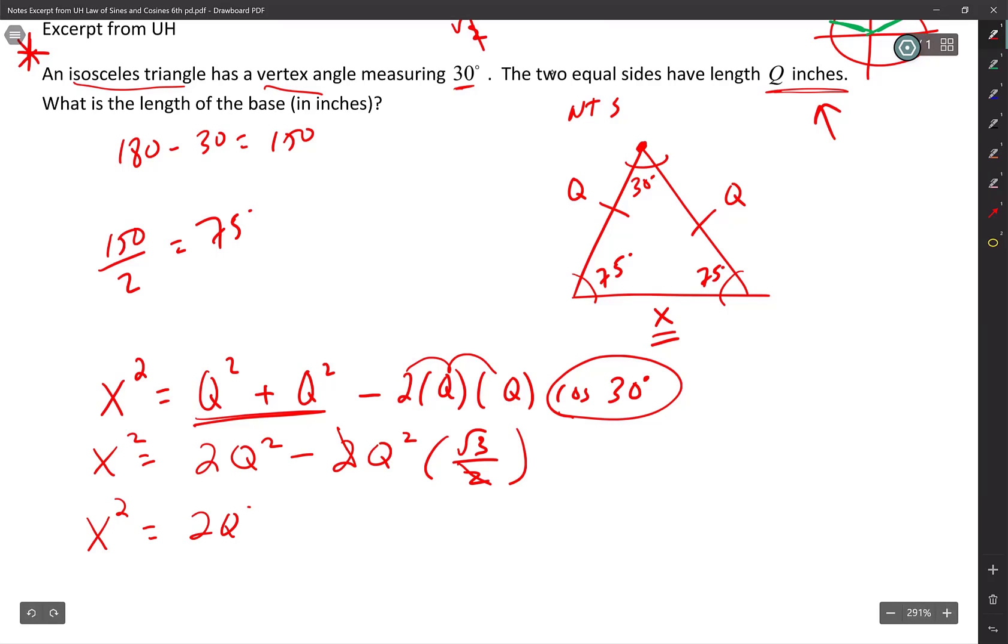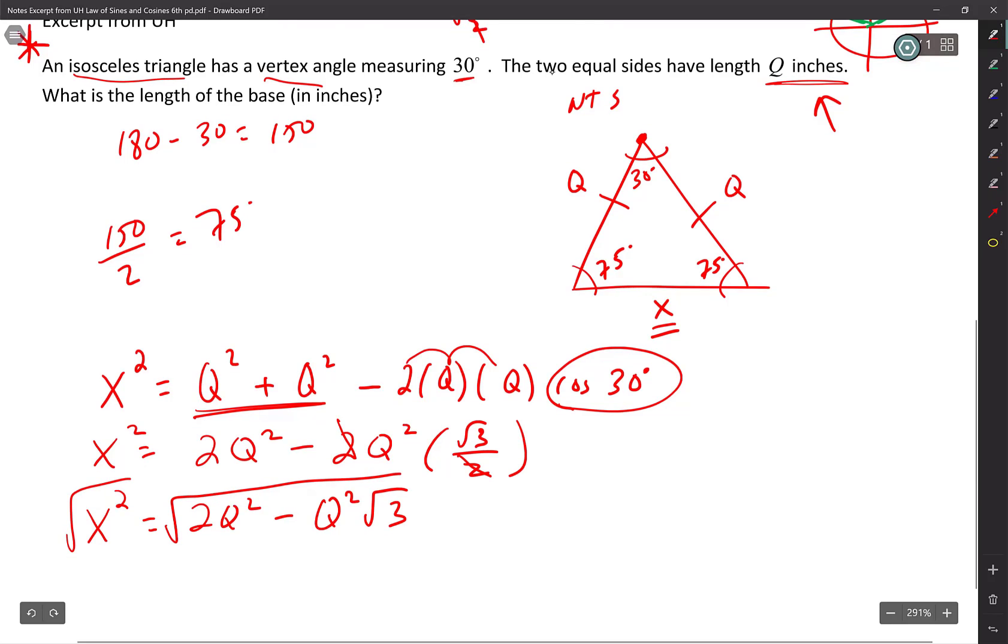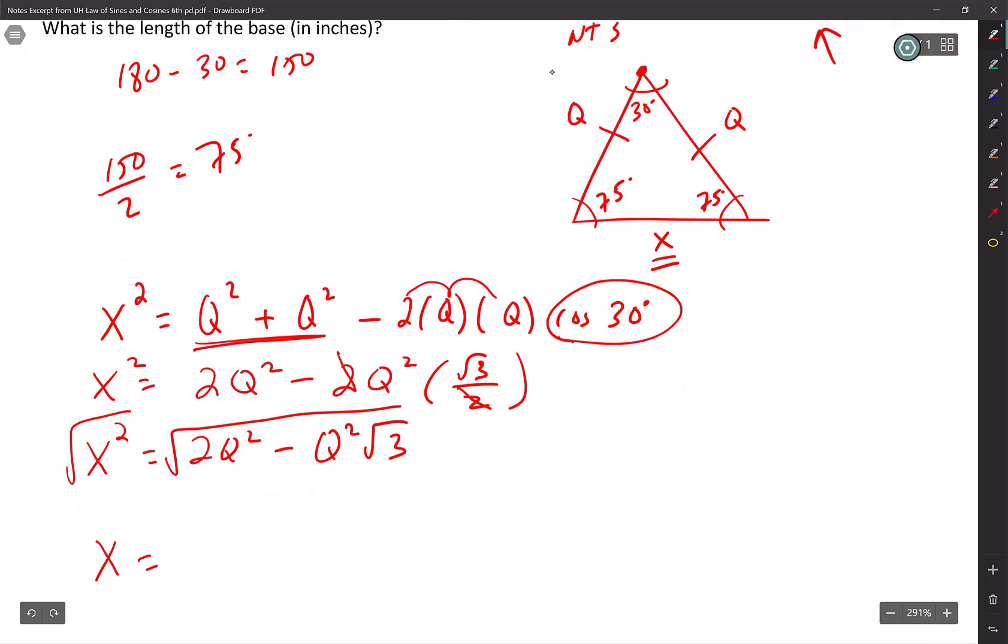And so now I have 2Q squared minus Q squared with a square root of 3 on it. I'm going to do a square root. So now let's see. X equals, and I can factor out a Q squared. Look at that. Square root of Q squared, parentheses, 2 minus square root of 3.